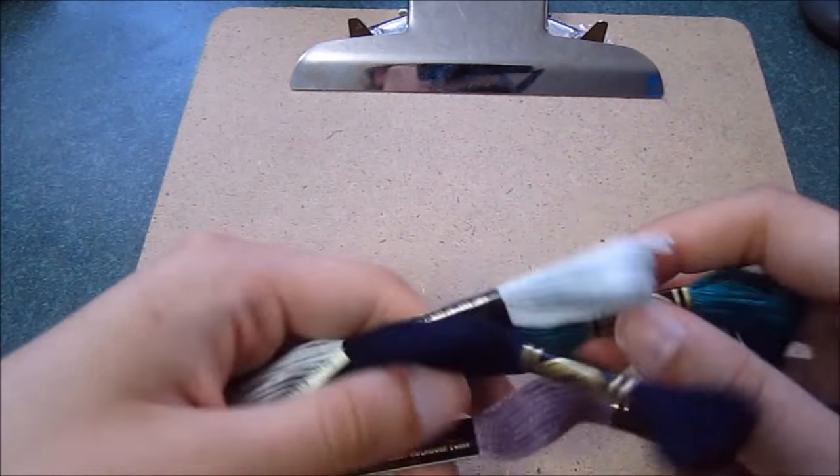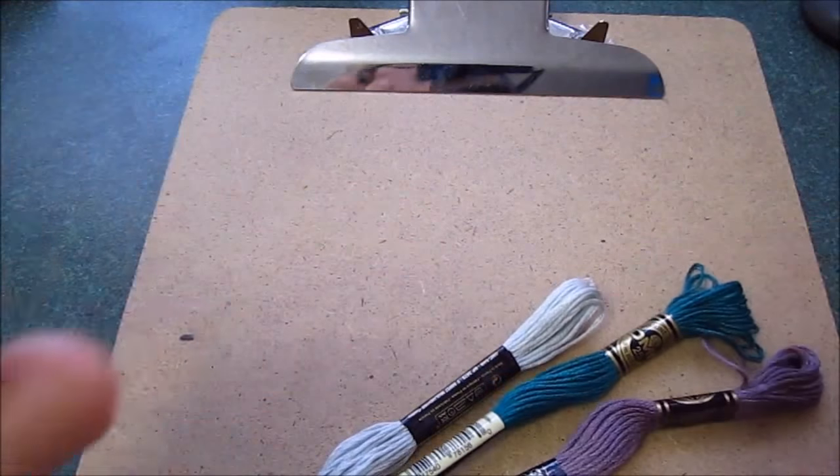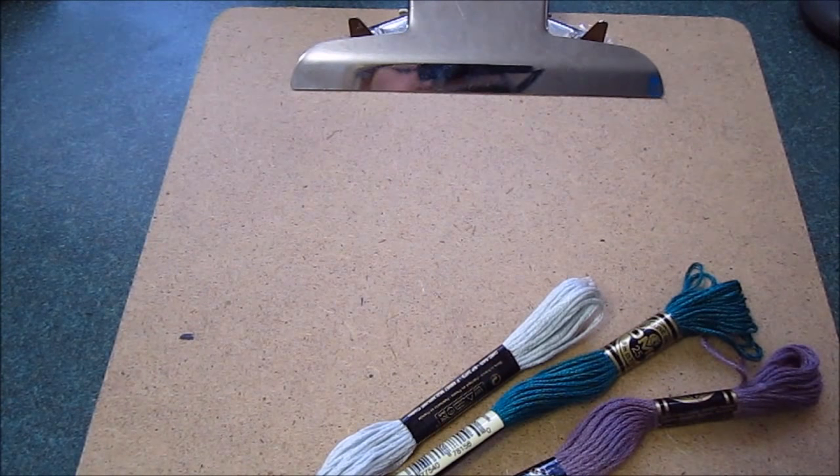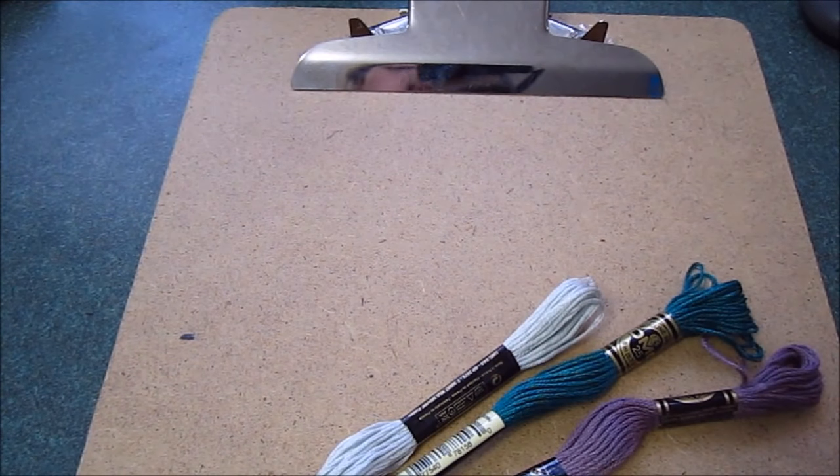So in order to make this friendship bracelet, you're going to need four different colors of embroidery floss, a clipboard, some scissors, and a ruler.